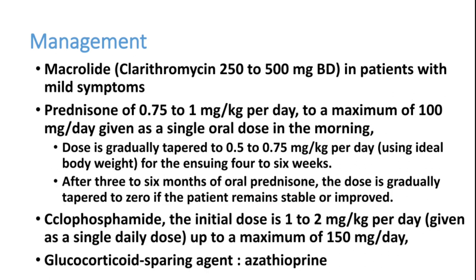For management, macrolides like clarithromycin and azithromycin can be given in patients with mild symptoms, as these drugs have both antibiotic and anti-inflammatory effects in the lungs. If the patient has florid symptoms or signs, an immunomodulator like prednisolone should be started at one milligram per kilogram body weight initially. For a 60 kg patient, that would be 60 mg of prednisolone per day, then tapered over three to six months depending on the disease.